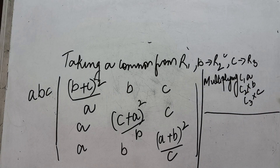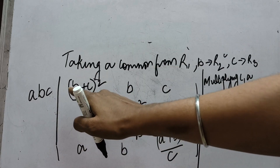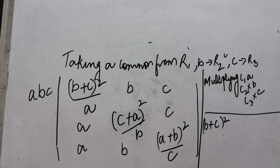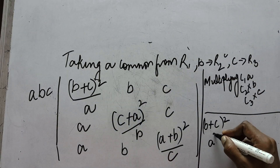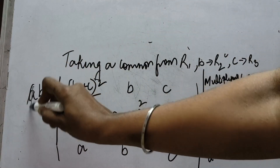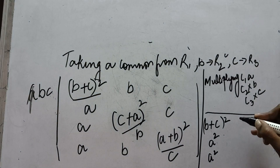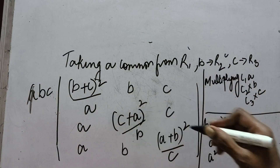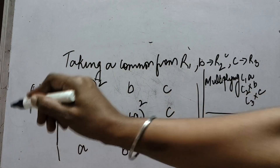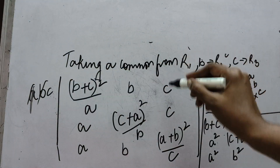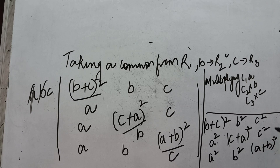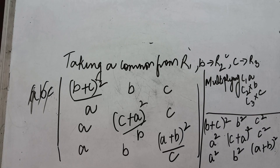If column 1 is multiplied by a: a and a cancel, leaving (b+c)²; the other elements become a² and a². Multiplying column 2 by b: b and b cancel giving (c+a)²; others become b². Multiplying column 3 by c: c and c cancel giving (a+b)²; others become c². So now I am left with a clean matrix with entries (b+c)², b², c² in row 1; a², (c+a)², c² in row 2; a², b², (a+b)² in row 3.